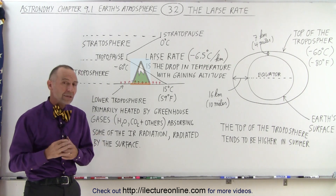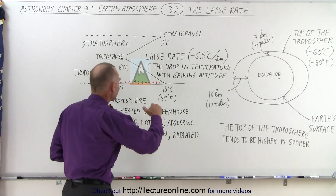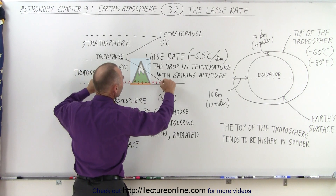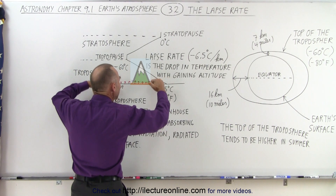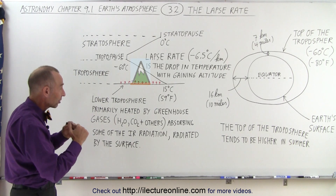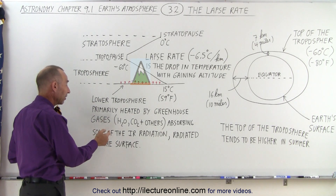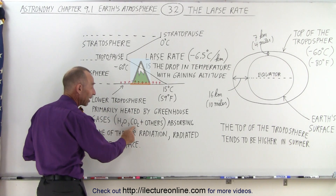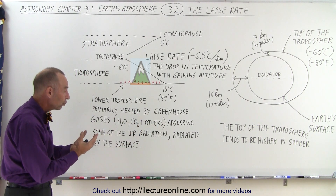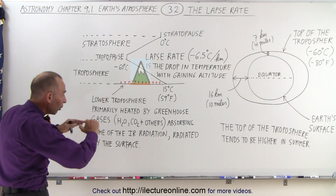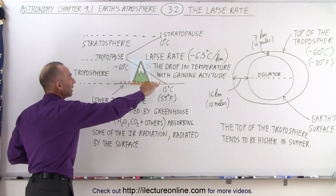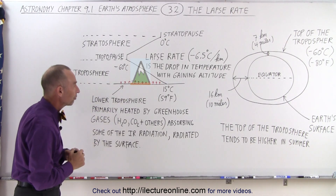The lower portion of the troposphere is where the vast majority of the energy is absorbed that is radiated from the surface of the Earth at the frequencies and wavelengths that greenhouse gases can absorb. The primary greenhouse gases are water vapor and carbon dioxide, but we also have nitrous oxide, methane, and ozone, among other things that also absorb energy to some extent. These are the two primary gases that heat up the lower troposphere.